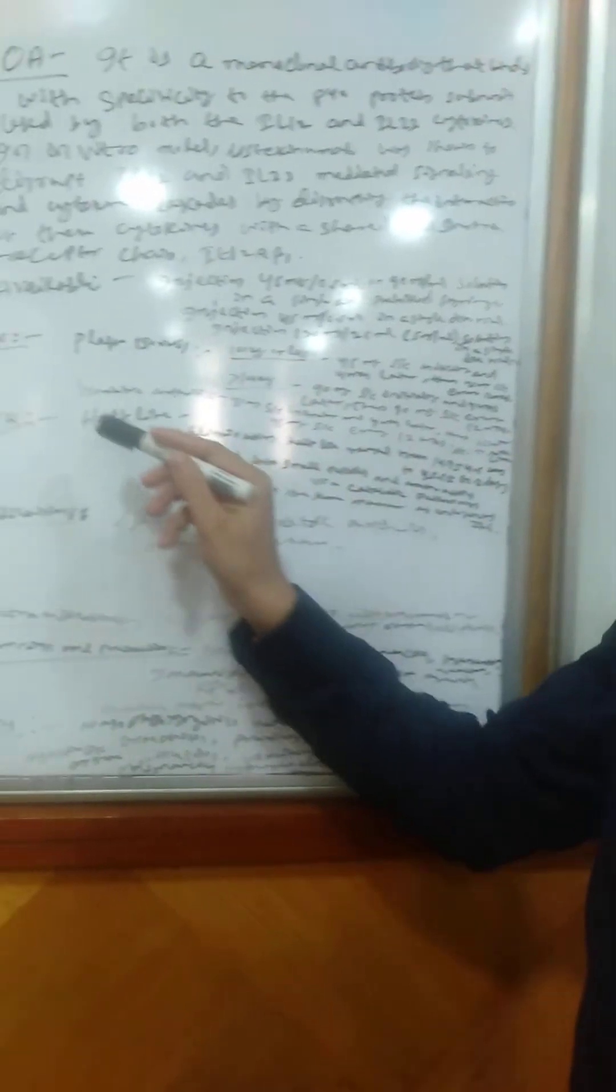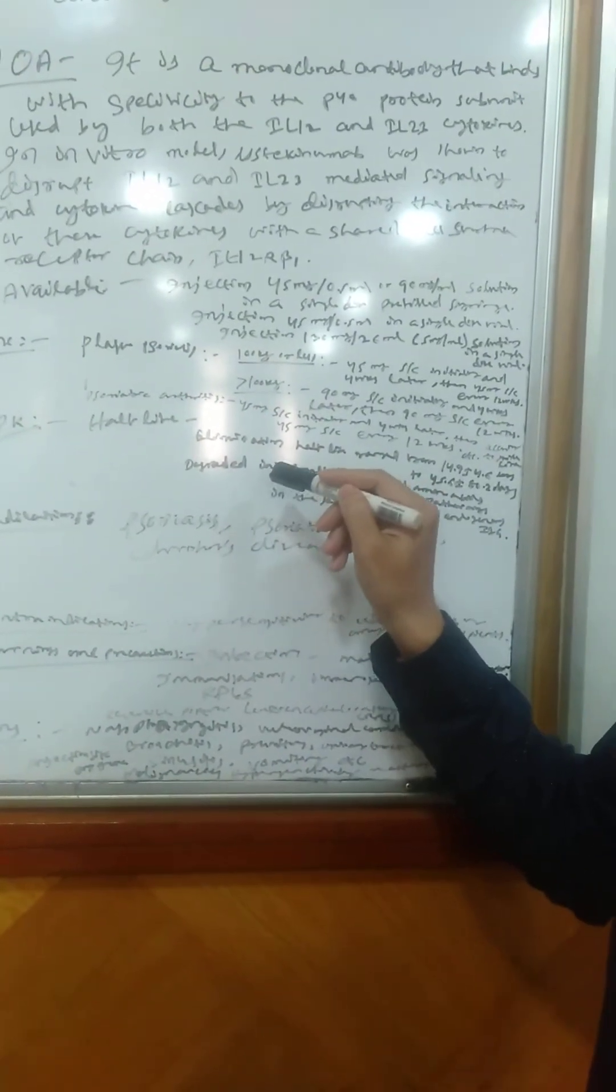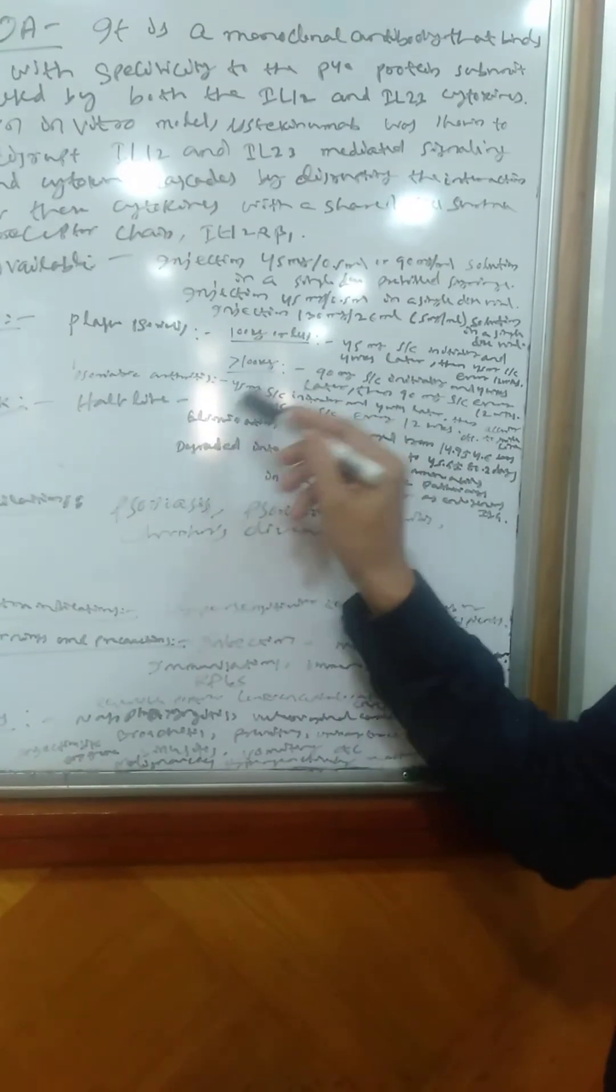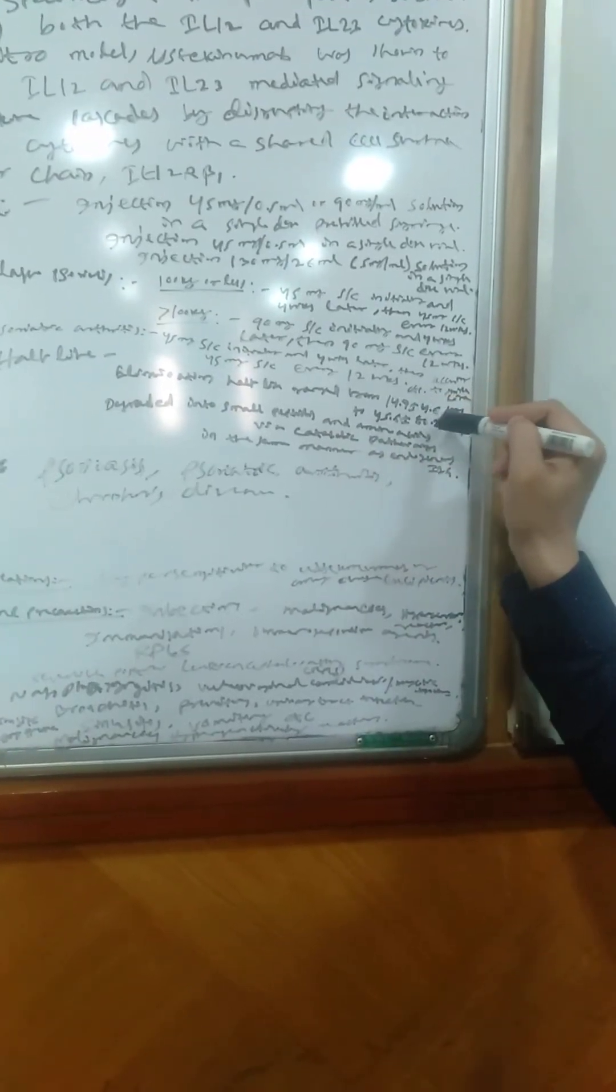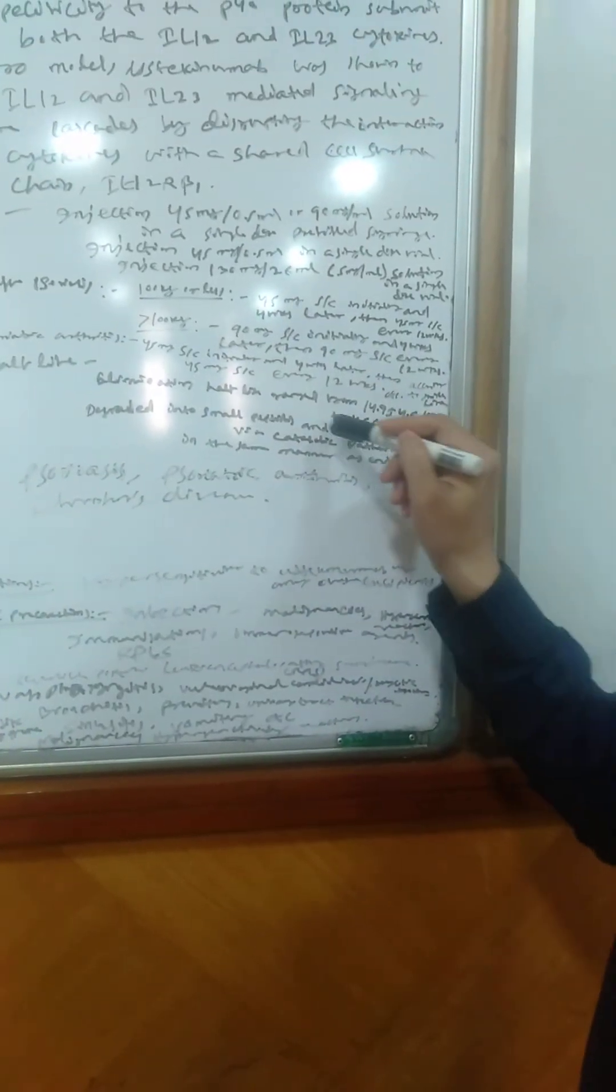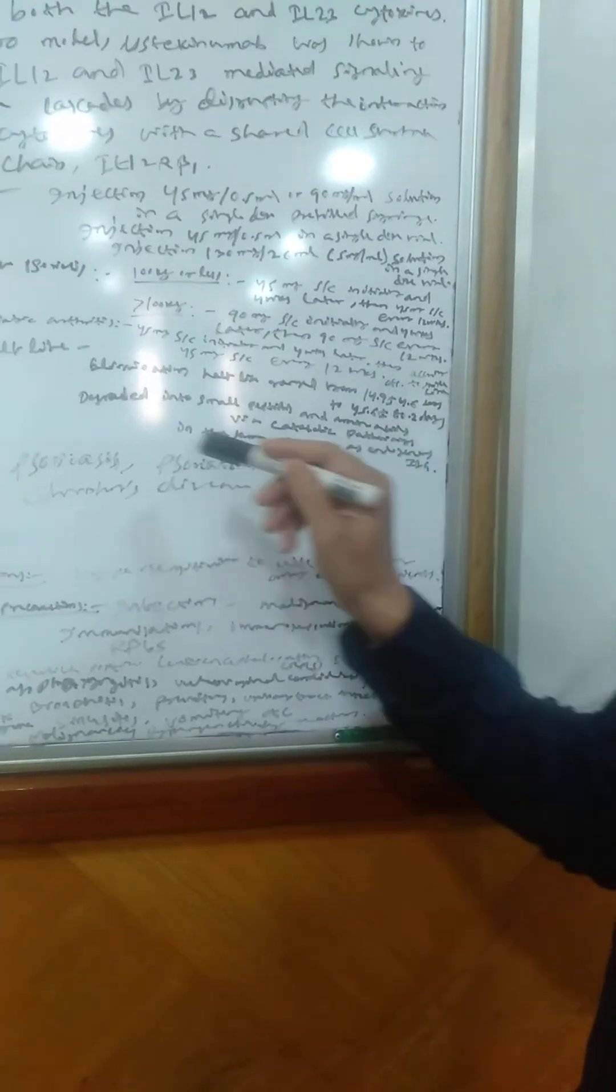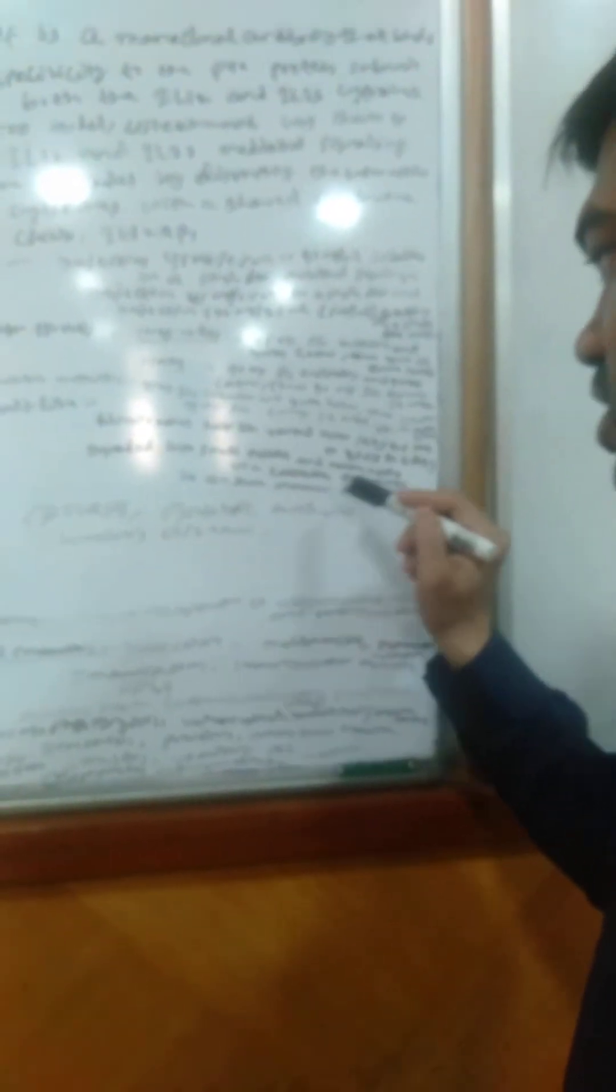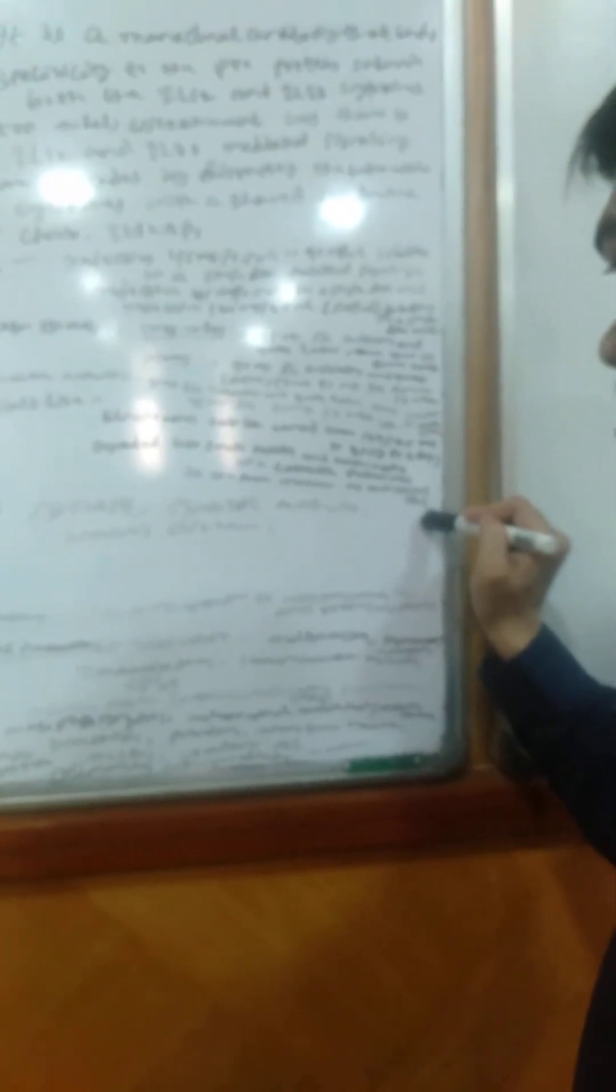Coming to the pharmacokinetics, half-life is long half-life, and elimination half-life range from 14.9 plus minus 4.6 days to 45.6 plus minus 80.2 days. And it is degraded into small peptides and amino acids via catabolic pathways in the same manner as endogenous IgG.